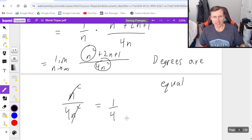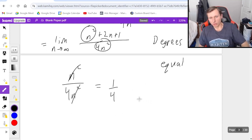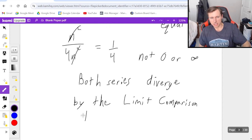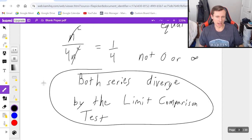Now is that good or bad? It's great, because 1 fourth is not zero or infinity, which means it's some finite non-zero number, and both series are going to do the same thing. So both series diverge by the limit comparison test. And there we go. That's it.